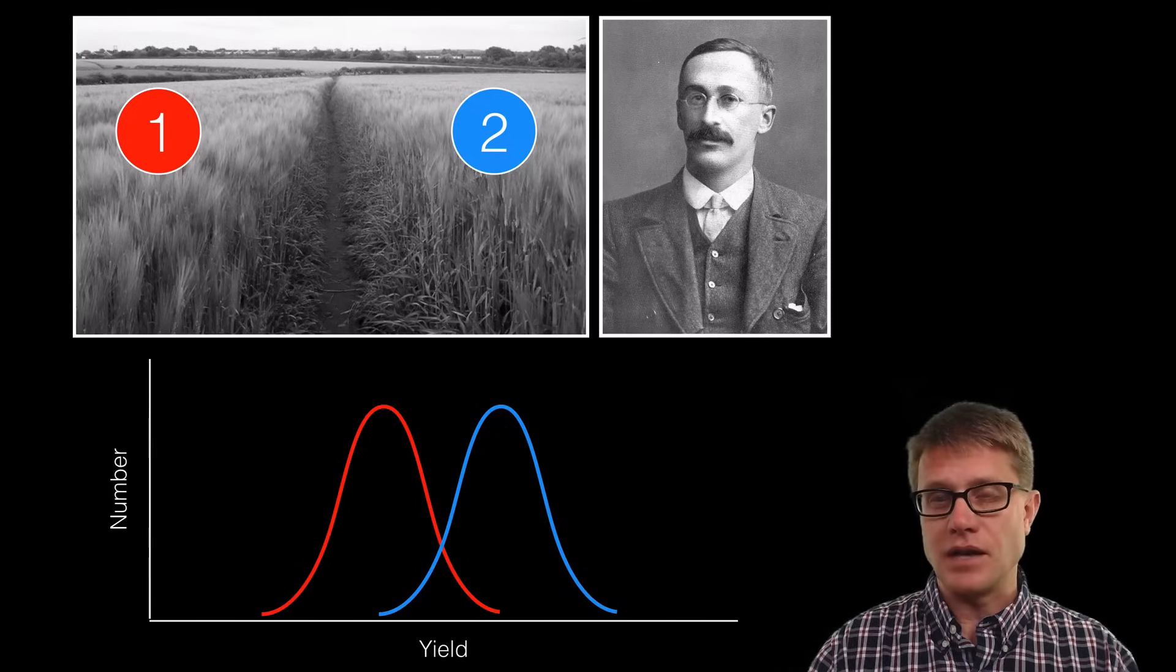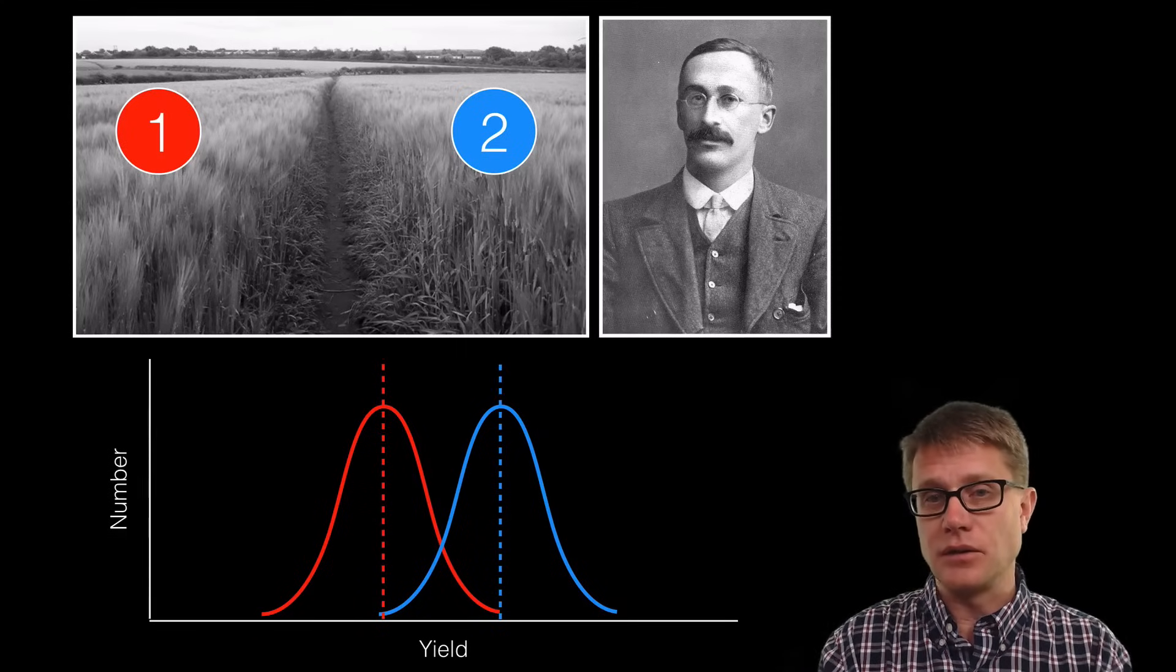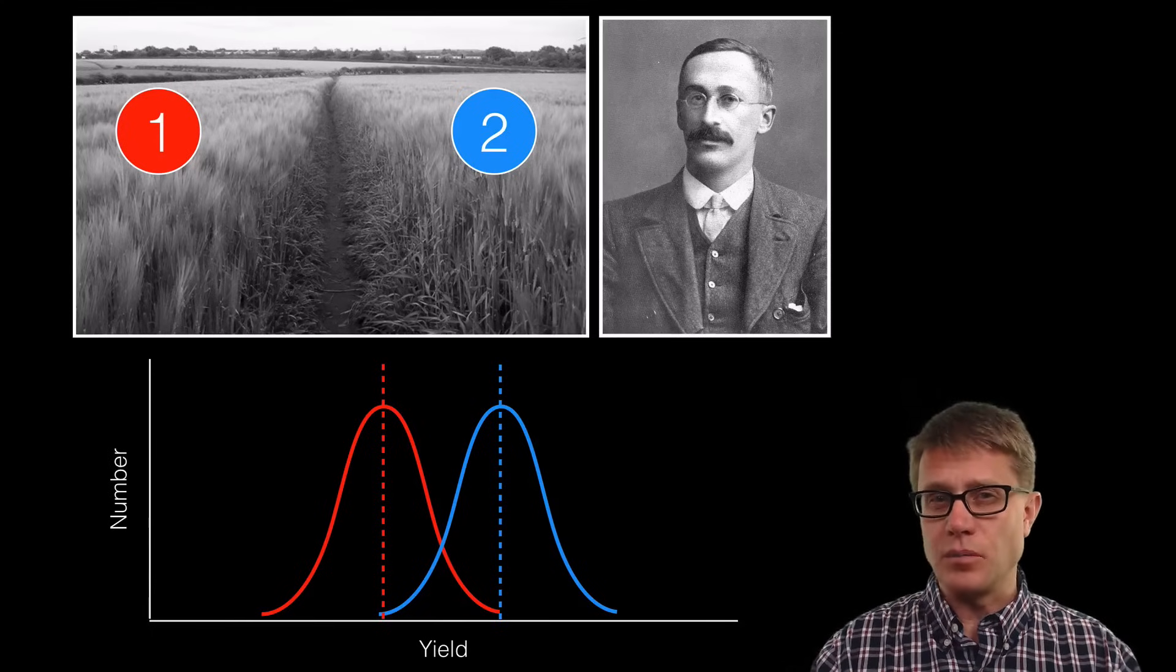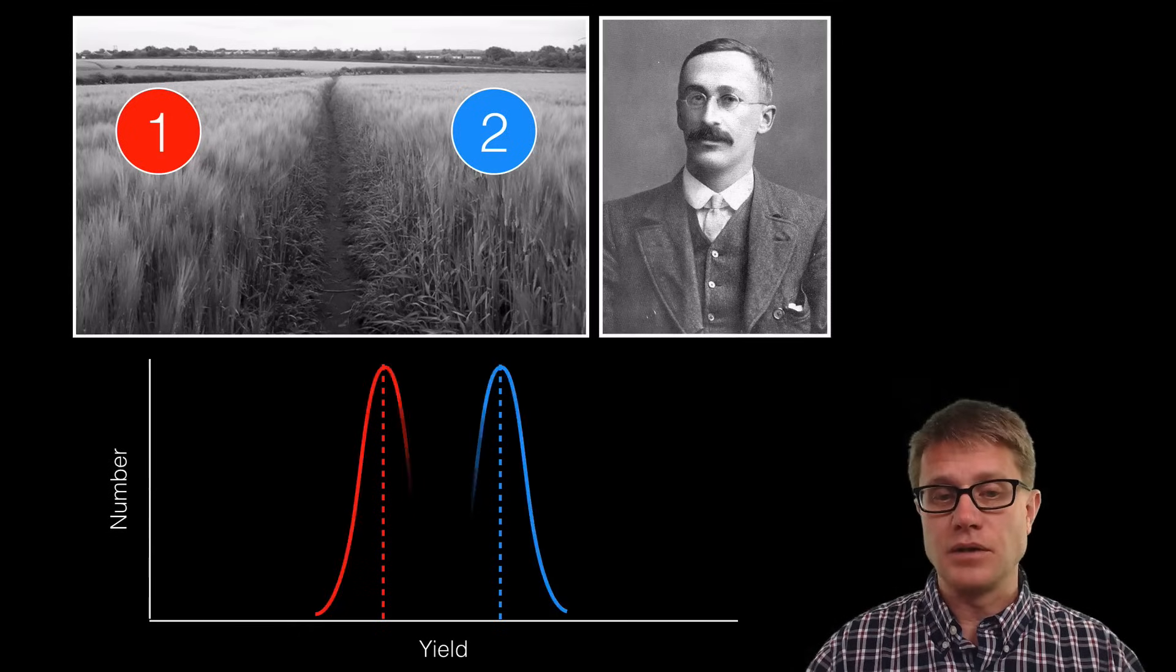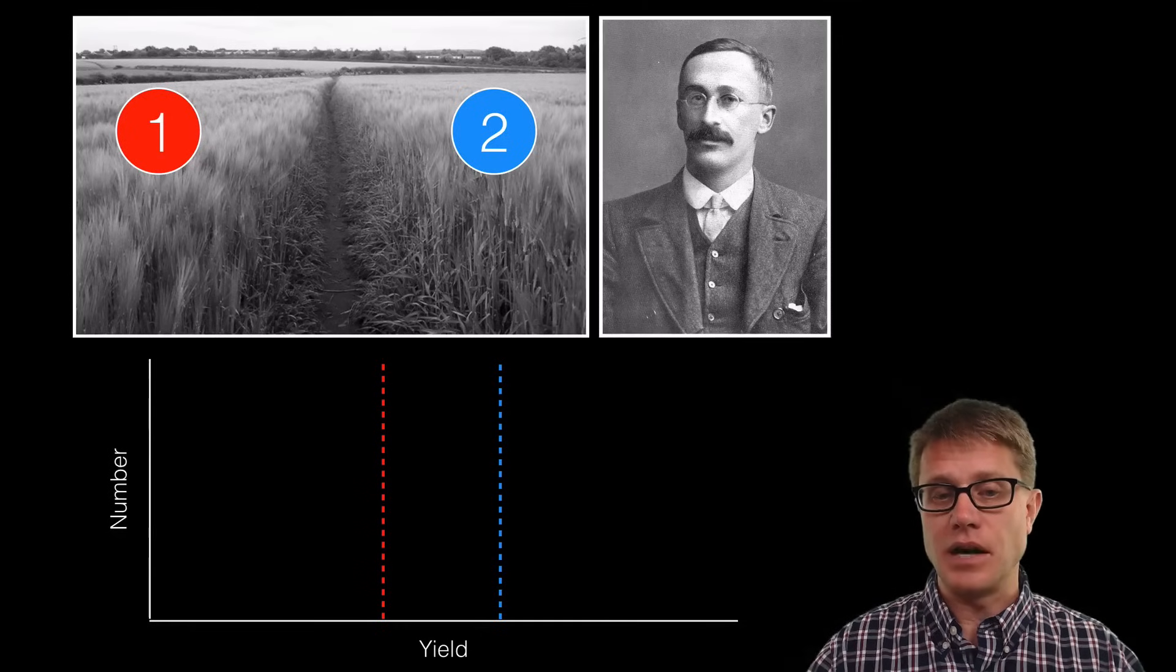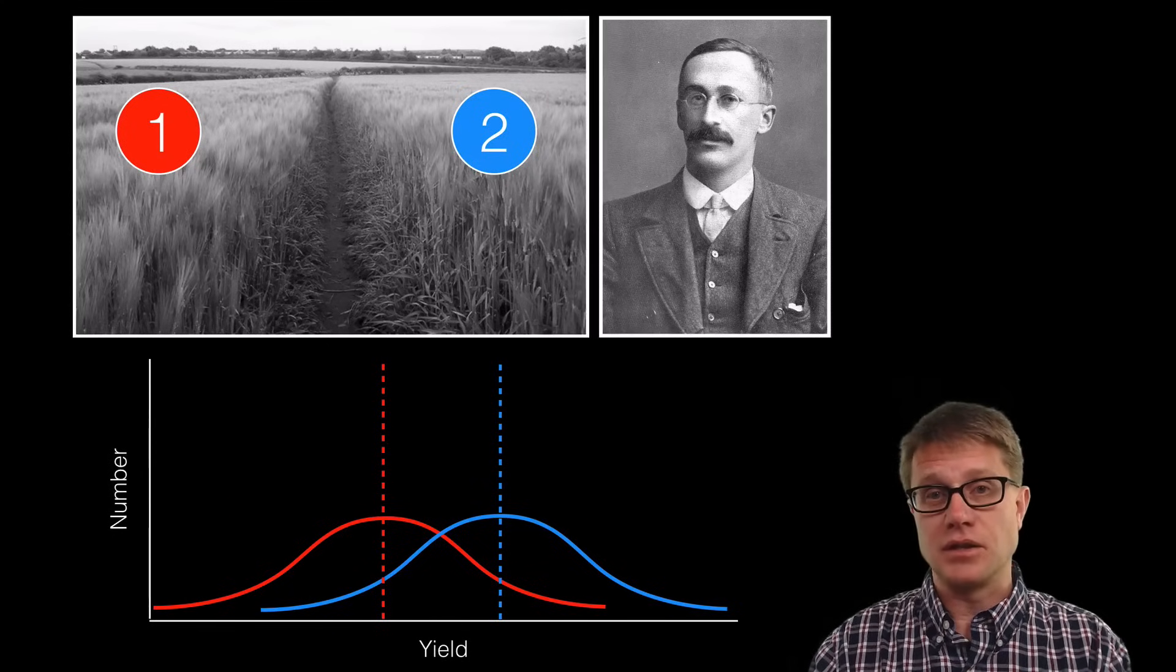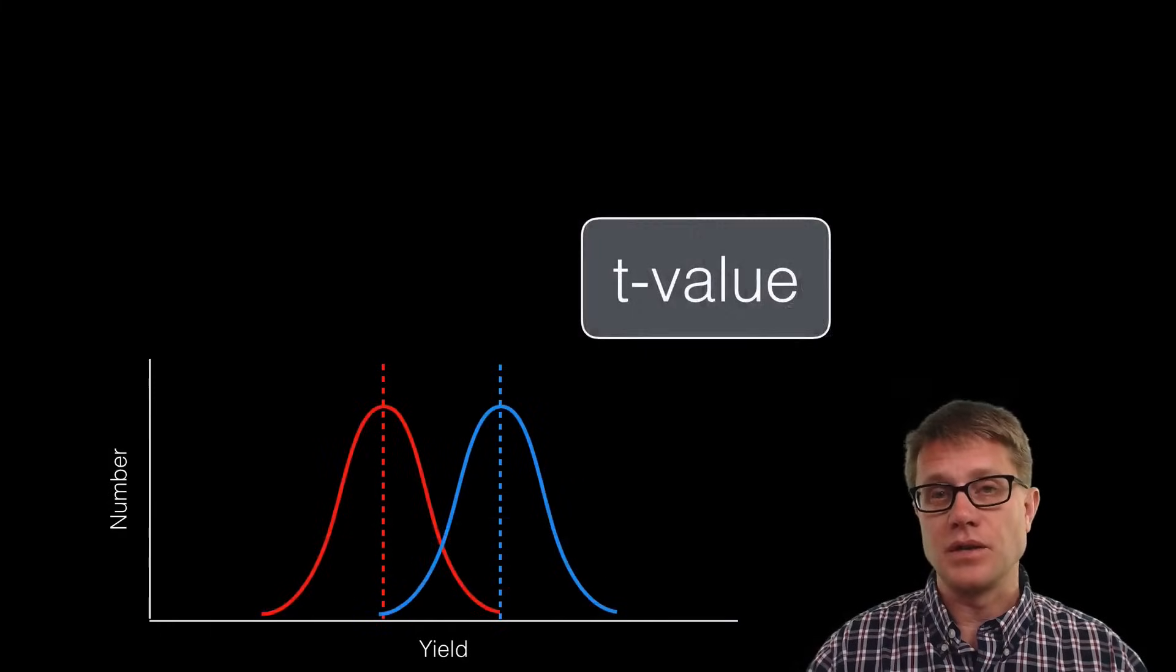Which one of these has a higher yield? We could figure out the mean, the average of each of those samples. And it looks like the average in field two is higher than the average in field one. But that's only part of the picture. The mean only tells us so much because we could have different distributions. Depending on that distribution or the variance within that sample, there could be a statistically significant difference between the two or not.